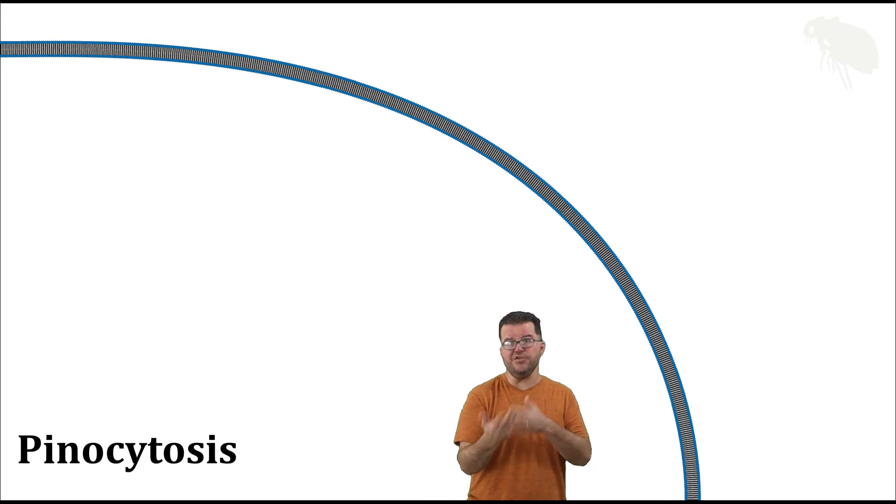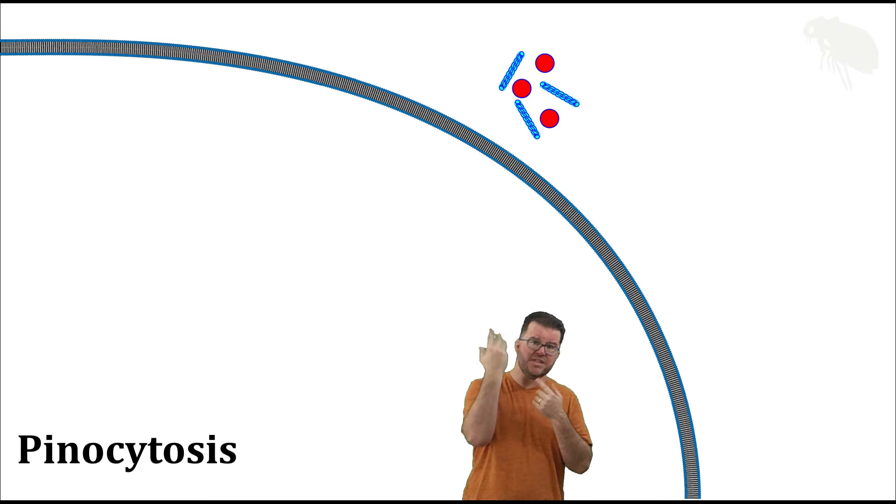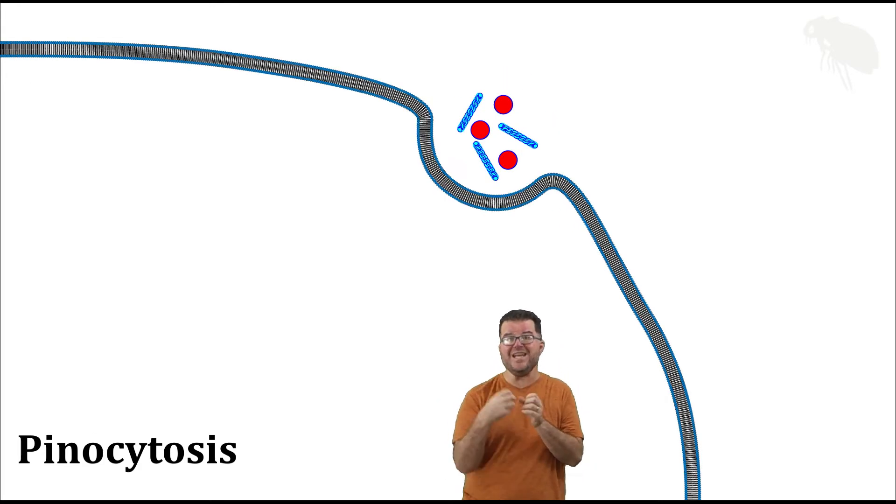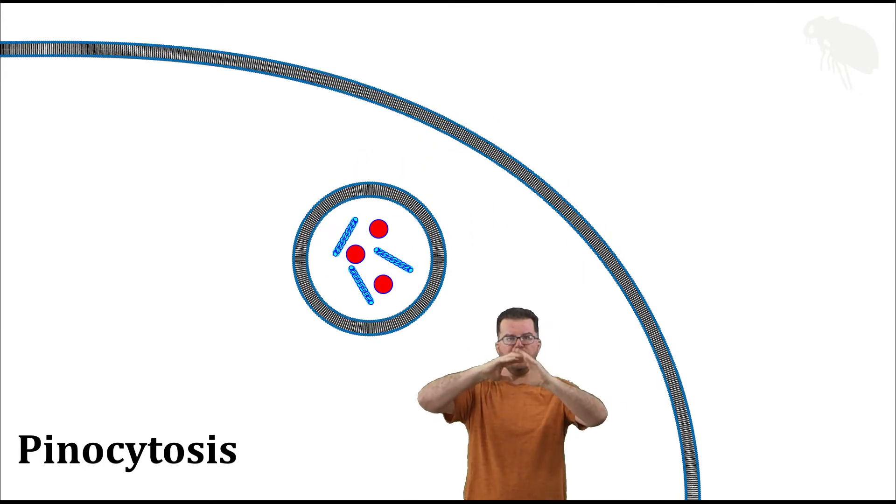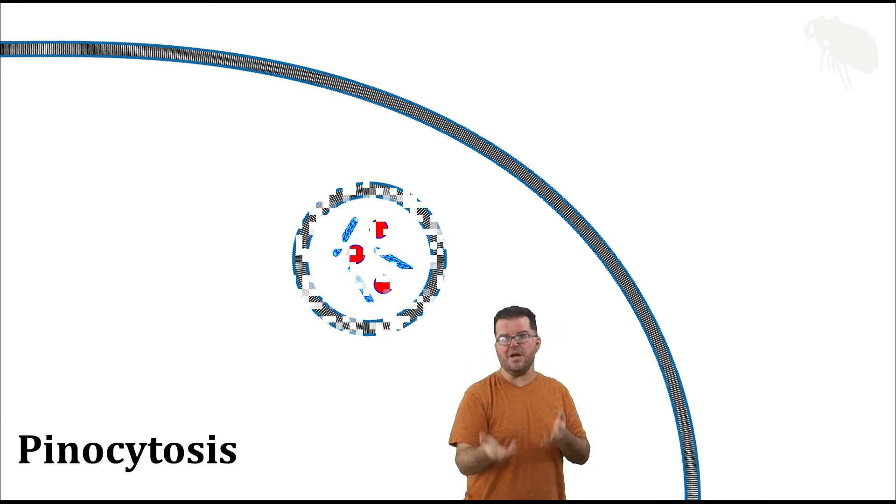And not only are we pulling in something different than in phagocytosis, but the mechanism is different. If you watch, we have a number of different cell solutes above my head there that the cell is going to pull in. And those solutes are pulled in when the entire membrane at that location pulls inward. It invaginates. And that invagination creates a vesicle that engulfs all of the fluid right next to that location in the membrane. So in pinocytosis, unlike phagocytosis, the membrane is invaginating to pull in large amounts of adjacent fluid, as opposed to extending the cell's membrane around a larger object.